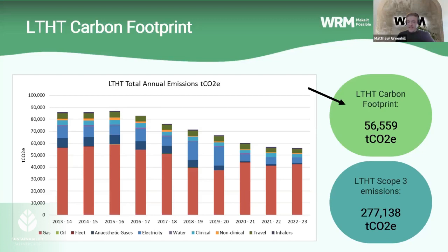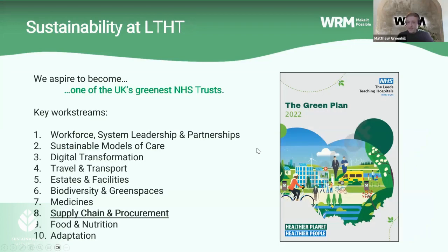The amount of carbon associated with procurement and supply chain is quite substantial. In 2021, LTHT commissioned an organisation to calculate its Scope 3 emissions, and these total 277,000 tonnes — providing a clear imperative for the trust to act to reduce its Scope 3 carbon impact. The trust launched its first green plan in 2020, updated in 2022, and one of the biggest themes is embedding sustainability into the trust's procurement processes.